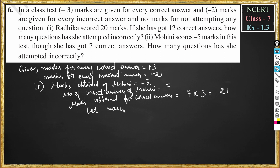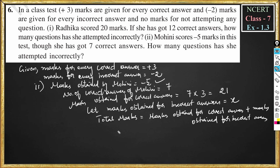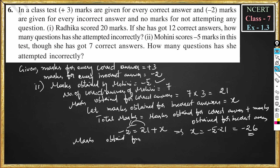Let marks obtained for incorrect answers be x. Total marks = marks for correct answers + marks for incorrect answers. So: −5 = 21 + x, which gives x = −5 − 21 = −26. Marks obtained for incorrect answers = −26.